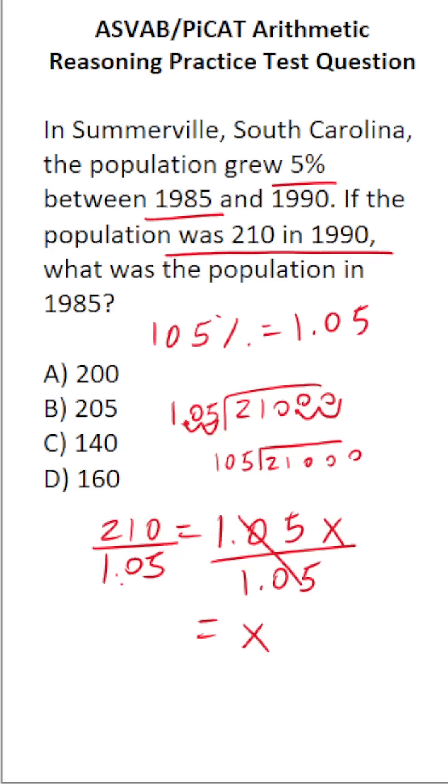Now, this is where the easy part is. 105 goes into 210 two times, and just bring up those two zeros. In other words, 105 times 200 is going to be 21,000 with no remainder. So if the population was 210 in 1990, then the population must have been 200 in 1985. So this one is going to be A.